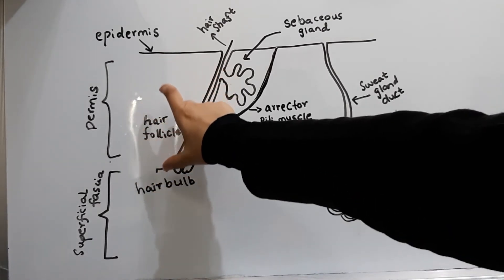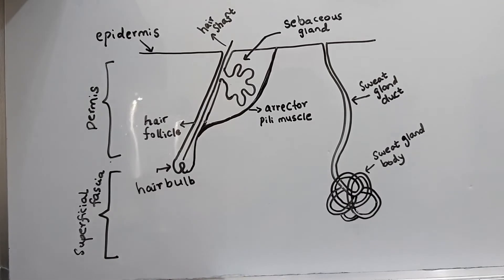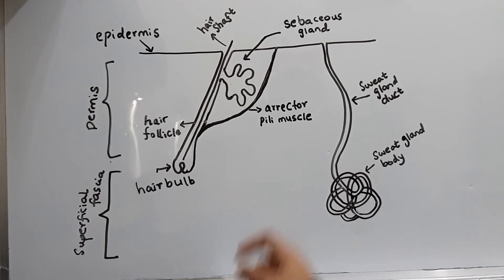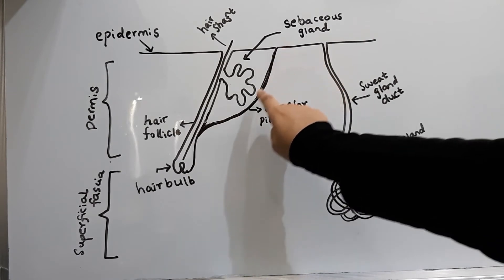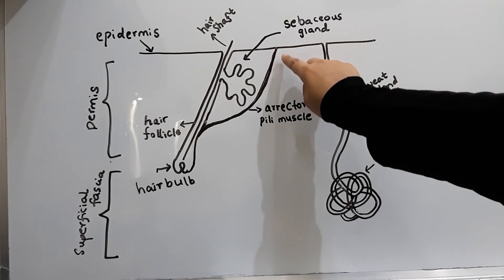The link of which is also provided for your reference. Before we end the video, I would like to cover one more term which is the arrector pili muscle. It's a band of smooth muscle which connects the lower end of the hair follicle to the upper part of the dermis.